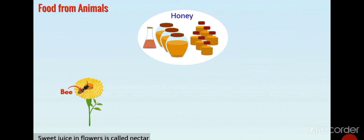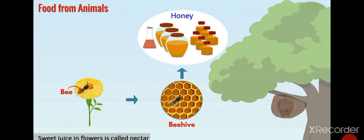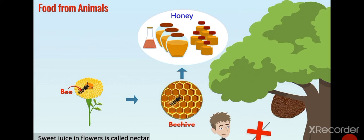We obtain honey from honeybees. Bees collect sweet juice from flowers called nectar. They store nectar in their living place called beehives. From beehives, we obtain honey. You must have seen beehives hanging on the tree. Don't disturb the bees. They are very strict towards their enemies. Their bite is very dangerous.